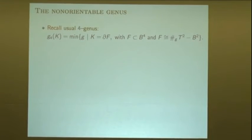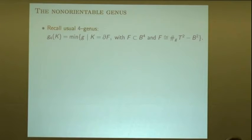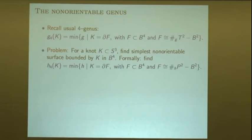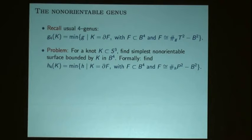I want to present the usual four-genus of a knot in this way: as the minimum number, the smallest connected sum of tori, that bounds in the four-ball. With that, I can state the problem and definition of the non-orientable four-genus. The question is, if you have a knot in the three-sphere, what's the simplest non-orientable surface that it bounds in the four-ball? I'll define the non-orientable genus as the minimum connected sum of projective planes with the knot bounding in the four-ball.